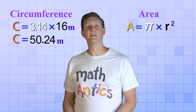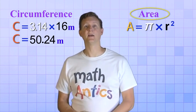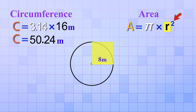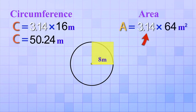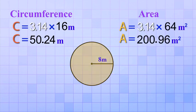Alright, now let's find the area using our formula area equals Pi times r squared. Again, we start with the radius, but instead of doubling it, we square it. That means we multiply it by itself. 8 meters times 8 meters equals 64 meters squared. Then, we multiply that by Pi. 64 times 3.14 equals 200.96 meters squared. That's the area of this circle.